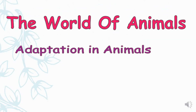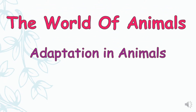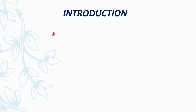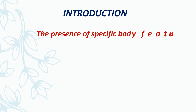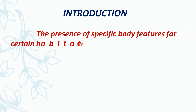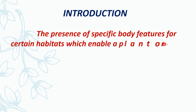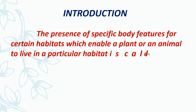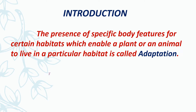The World of Animals: Adaptation in Animals — Fish. The presence of specific body features for certain habitats, which enable a plant or an animal to live in a particular habitat, is called adaptation.